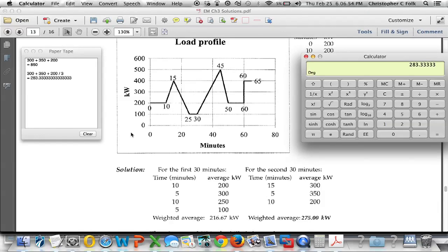300 plus 350 plus 200 equals 850 divided by 3. And the answer is 283 in the third. Well, that's not what we want. It says here we're supposed to come up to 275. I'm going to have to add this together differently.